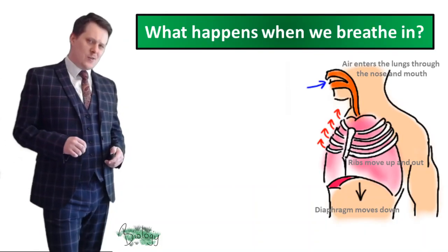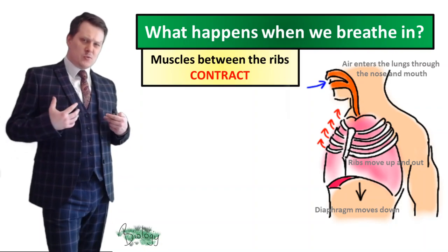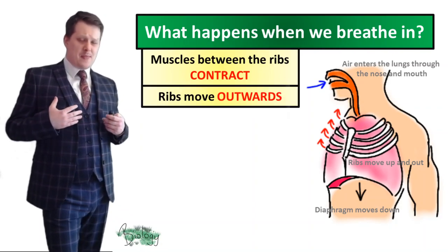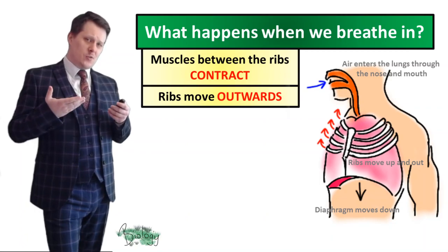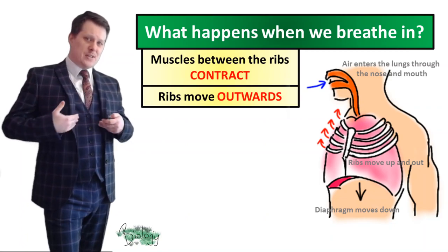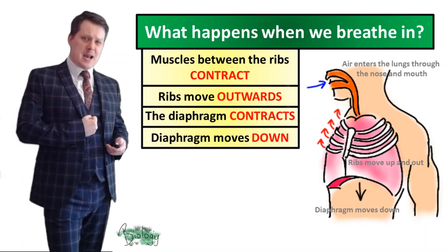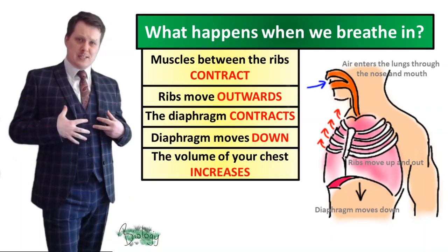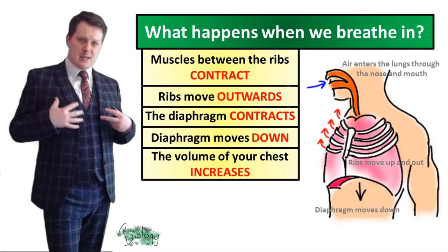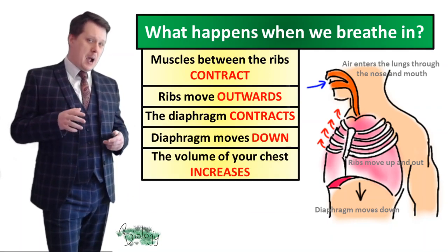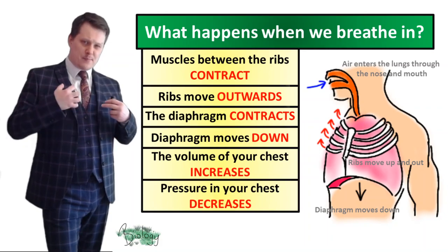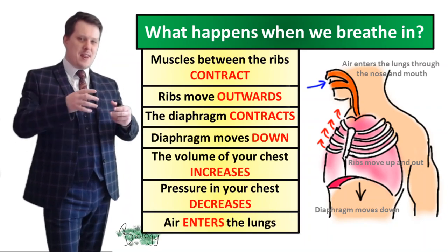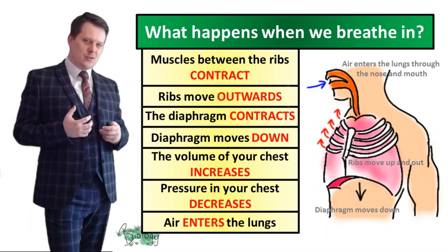When you breathe in, the intercostal muscles between your ribs contract and pull the ribs outwards and upwards. The diaphragm just underneath contracts and moves downwards. This causes the volume in your chest to increase, and because of that the pressure in your chest decreases, then air enters the lungs.